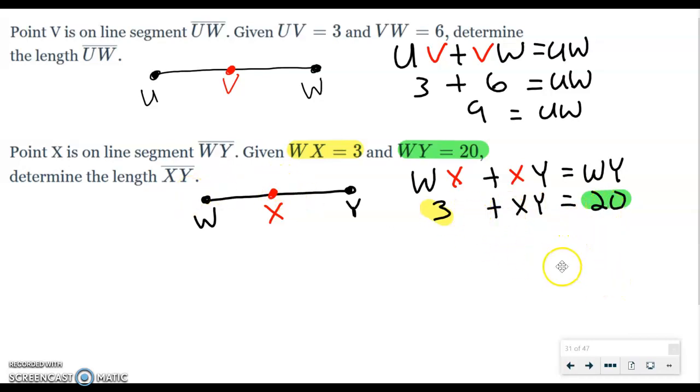The one we don't know is XY. So now what we want to do is solve for XY, just like we solve for any equation. We'll subtract 3 on both sides and get 20 minus 3 is equal to 17. So the measurement of XY is 17.